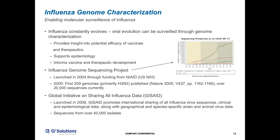If we want to understand how that virus evolves, one of the best ways to do so is through genome characterization. This gives us insight into the efficacy of vaccines and therapeutics — we can see whether or not the targeting was effective. It supports epidemiological studies and, most importantly, it informs the development of future vaccines and therapeutics.